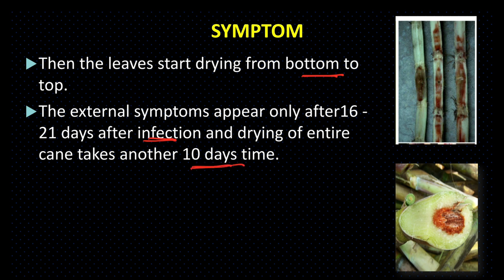जब pathogen का population plant में बहुत ज़्यादा हो जाता है, तो वो ज़्यादा मात्रा में nutrition को host से लेते हैं, जिसके कारण leaves मरने लगते हैं और drying होती है। जो पहला external symptom है वो infection के 16 से 21 दिन के बाद दिखाई देता है। अगर हम leaf को cut करेंगे तो red color का discoloration दिखाई देता है, जैसा कि इस picture में दिखाई दे रहा है।